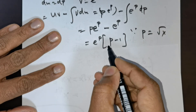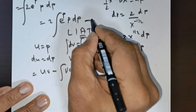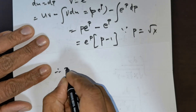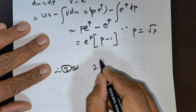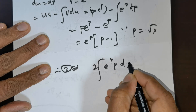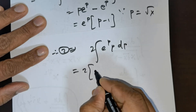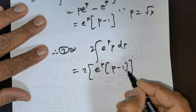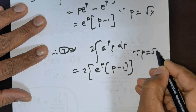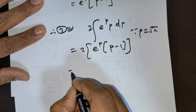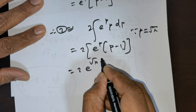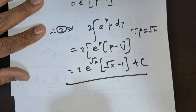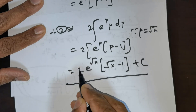Now take this value and substitute it back. Therefore, 2 times e raised to the power of p times p minus 1. Since p is equal to root of x, substitute: the answer is 2 times e raised to the power of root of x times (root of x minus 1). Place the arbitrary constant c. That is the solution to this question.